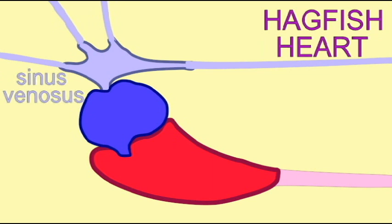They possess three chambers: a sinus venosus, an atrium, and a ventricle, and these are chambers found in all vertebrate hearts, at least in embryos.